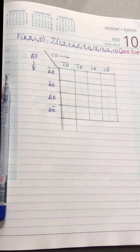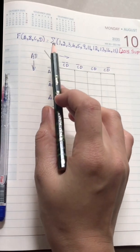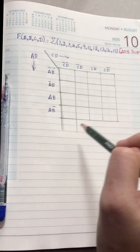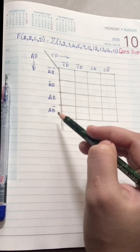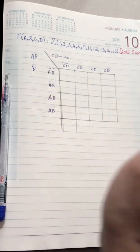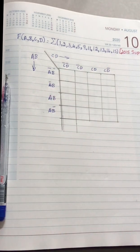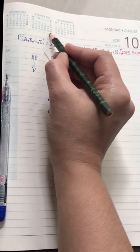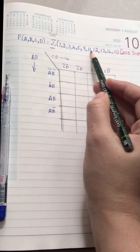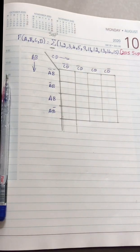So let us see the question. We have f of a, b, c, d — since it is a four-variable function, we are going to use a, b, c, d in our K-map. I have used a and b in all the rows and c and d in the columns. The next step is to check whether it is SOP — sum of product, indicated by the sigma symbol. Wherever the specified minterm numbers appear, we place a one.